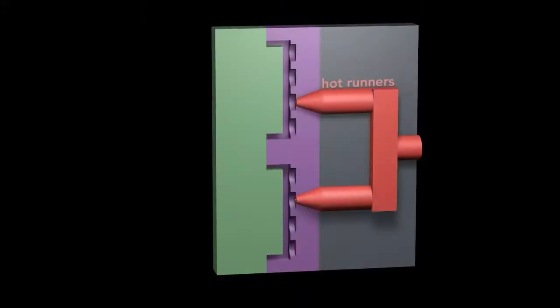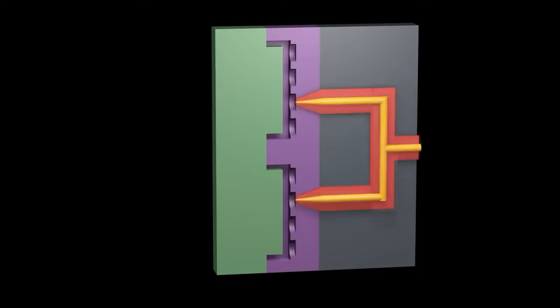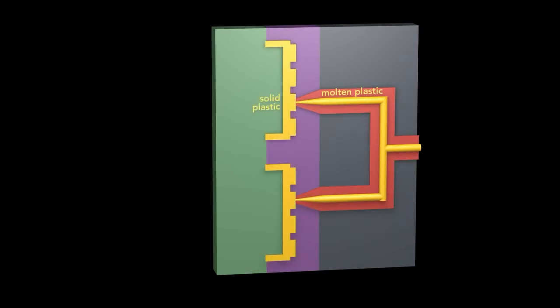The Lego molds use hot runners. Hot runners are a heated distribution network. This keeps plastic inside the runner's molten while the plastic in the mold solidifies. This leaves no gates or sprues to be removed.